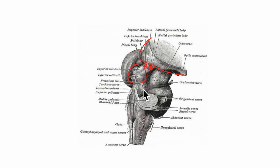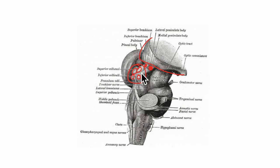Here is the midbrain and the remaining structures. The medial geniculate body is an oval elevation situated below the pulvinar. It lies lateral to the superior colliculus — as you can see here, the superior and inferior colliculi are parts of the midbrain. The inferior brachium connects the medial geniculate body to the inferior colliculus, shown right here.